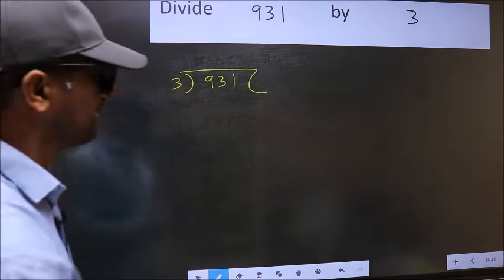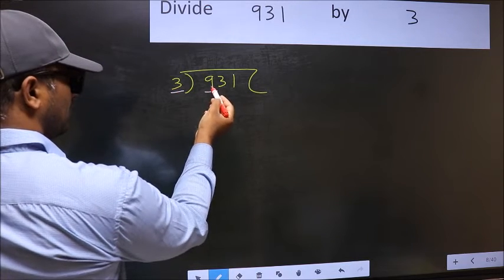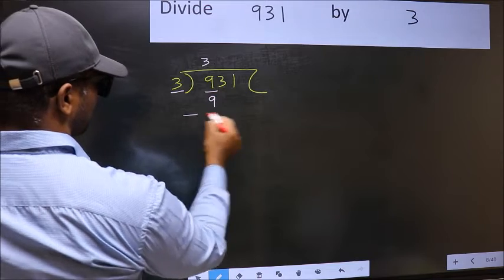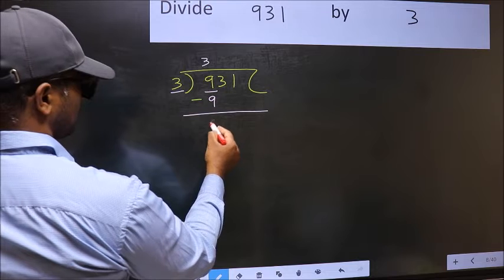Here we have 9 and here 3. When do we get 9 in the 3 table? 3 times 3 is 9. Now you should subtract. 9 minus 9, 0.